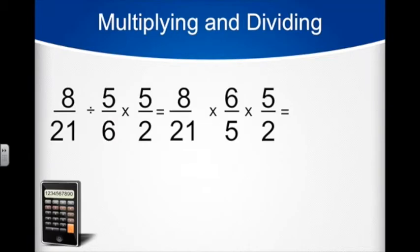Now, since all three fractions are being multiplied, we can reduce. 6 and 21 are both divisible by 3, so when we reduce the 3 over 3 out, there is a 2 left from the 6, because it was 2 times 3, and a 7 left from the 21, because it was 7 times 3.